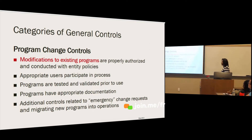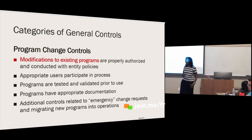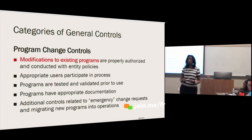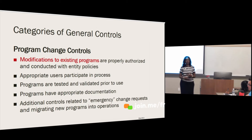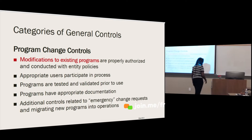Program change controls similarly require proper authorization according to company policy, appropriate user involvement, testing and validation prior to use, and appropriate documentation. Sometimes changes are in response to a program not operating as intended or not meeting user needs, which may create emergency changes. You should look for documentation and approval around that process. Program development and change should be a well thought-out, planned process.